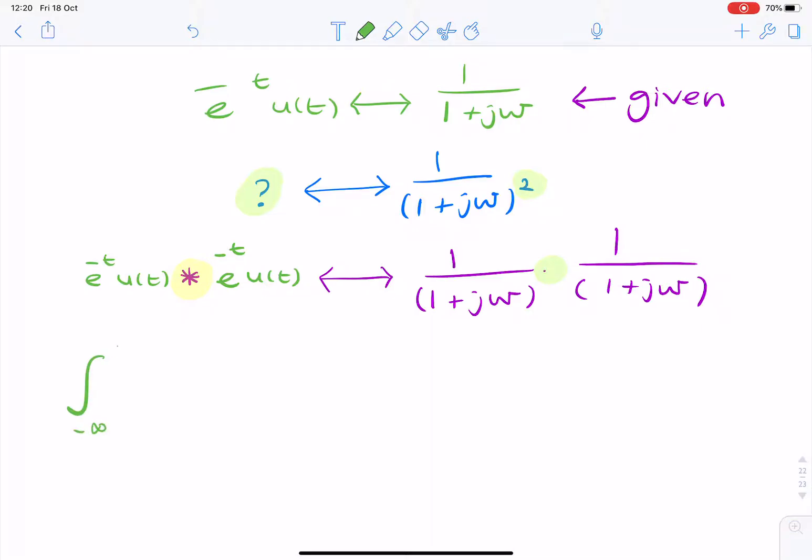We simply apply the definition of convolution, which is the integral from minus infinity to infinity. The first function, let's call it x, will be x of tau multiplied by y of t minus tau d tau. That's the definition.